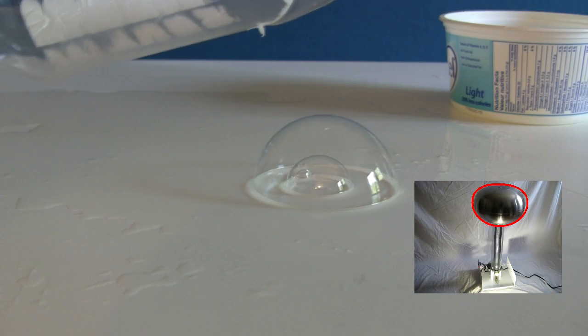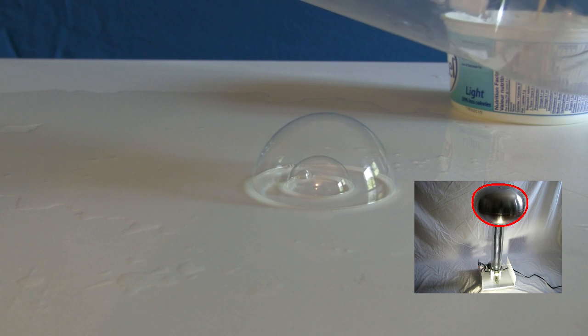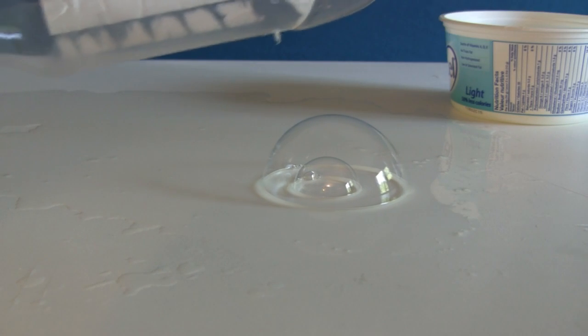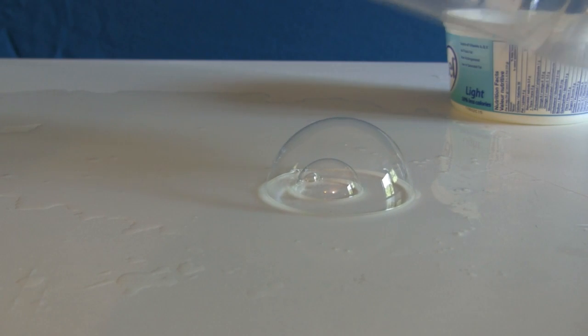Another example is a dome on the top of a Van de Graaff generator. It's also a Faraday cage. So the soap bubble inside doesn't experience any attraction or repulsion of charge at all.